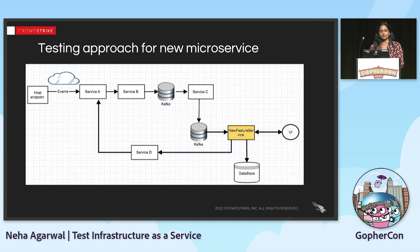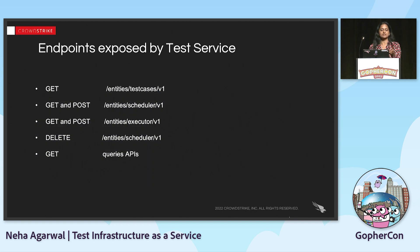Let's look at an example where I have used this approach to test a new feature. A new feature service was introduced that had integrations with Kafka, a back-end data store, and UI. It was very seamless to add all the dependencies needed in the new test service and create dummy events, testing very close to the libraries already exported by the test service. The test service exposes endpoints via the library, making it easy to exercise GET and POST endpoints to create a new scheduler for a cron job or run tests using the executor endpoints on demand. We can also use the GET endpoints to see what test cases are already exported by the test service.